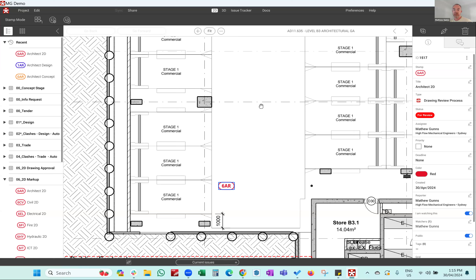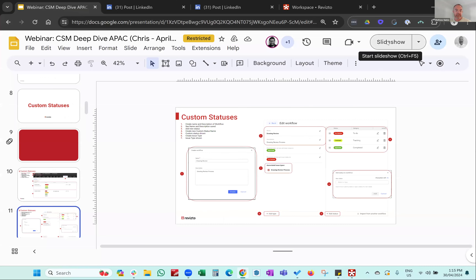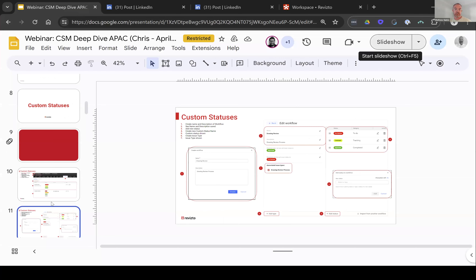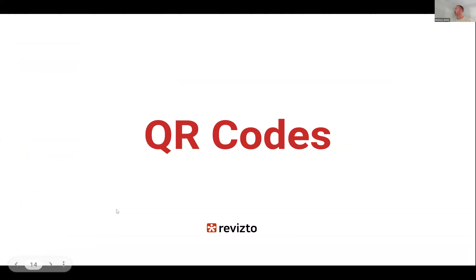That's a little example of custom statuses and how we utilize them on drawings and models. We'll jump back into the presentation and look at the next topic — QR codes. I'll mute myself and let Michael speak now.